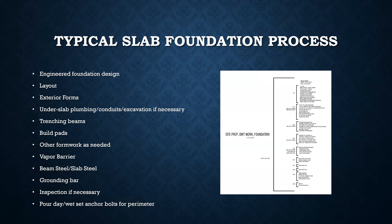Once the pads are built up, you bring in other formwork — garage steps, drops in the house, steps, and other needed pieces. Then you put down the vapor barrier across the entire foundation. The vapor barrier is a big plastic sheet that keeps water from causing problems with the concrete. Concrete is porous and will absorb water; when water reaches the steel inside, the steel can rust, expand, and crack the concrete. So the vapor barrier is essential.